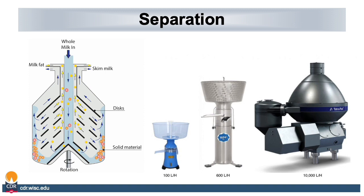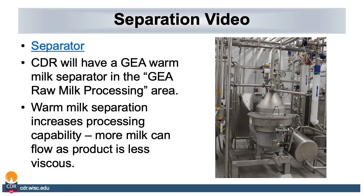On the diagram to the left you can see how the disks of the separator rotate and how it separates the fluid. The whole milk comes in through the center, goes up through the rotating disks, and then you get separation of skim milk and milk fat or cream, and any solid debris like somatic cells will get thrown to the sides as solid material. CDR will have a GEA warm milk separator in the GEA raw milk processing area in the new CDR production pilot plant. Warm milk separation increases processing capability as more milk can flow since product is less viscous.